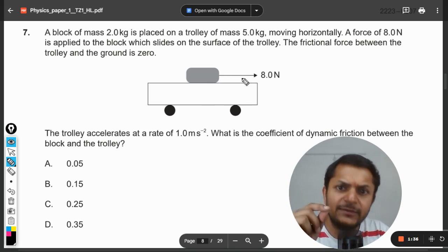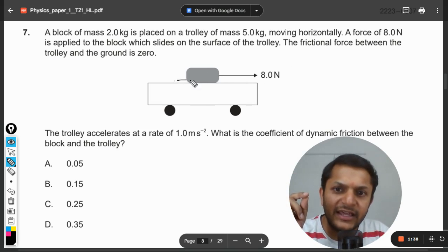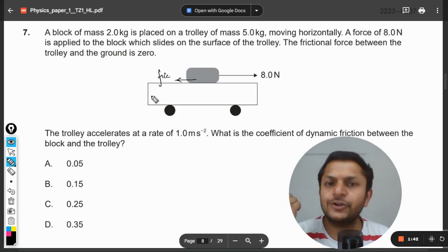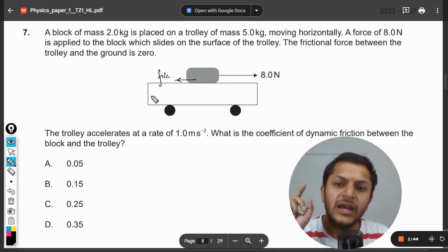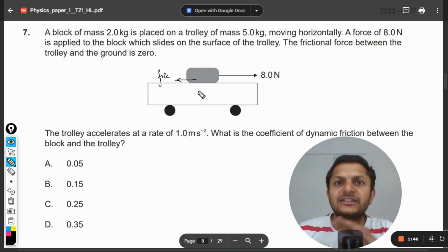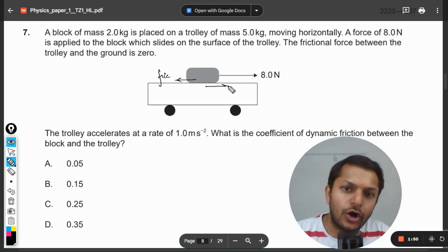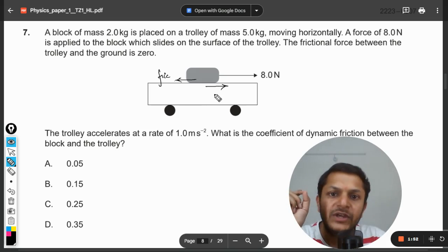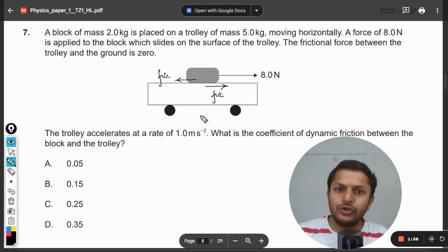Obviously when you are pulling the block there is a friction there. So this is the friction force which is acting on the block in the backward side. But the same friction is creating an action reaction pair which is acting on the trolley. So the friction of the same magnitude which is acting against the block is facilitating the motion of the trolley.